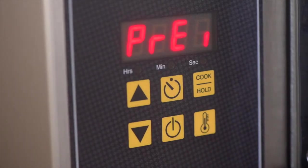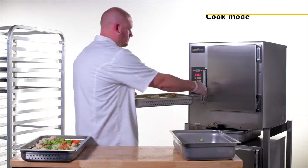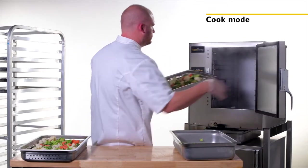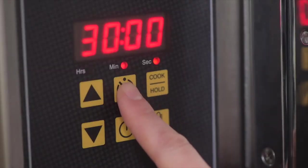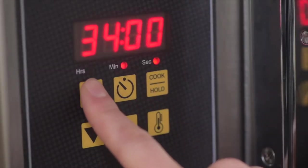Once in cook mode, simply load pans into the steamer, close the door, and push the timer start button. The default time is 30 minutes.